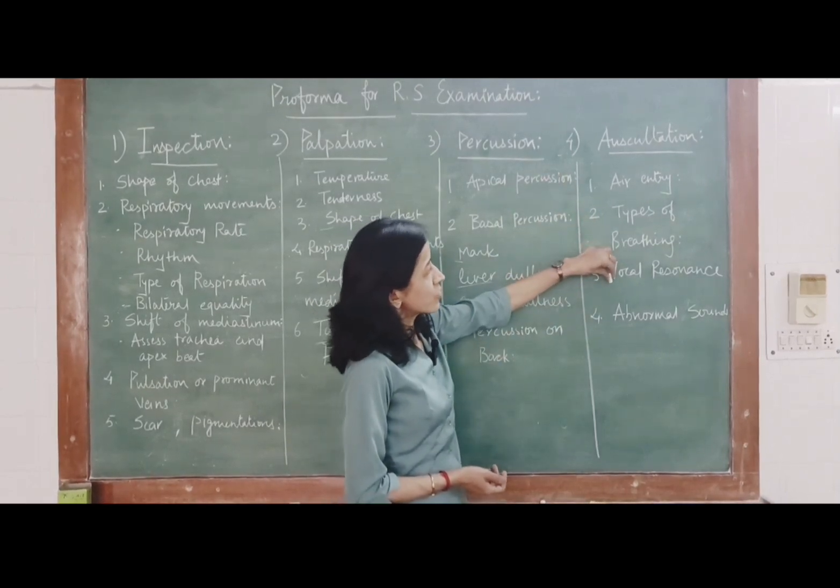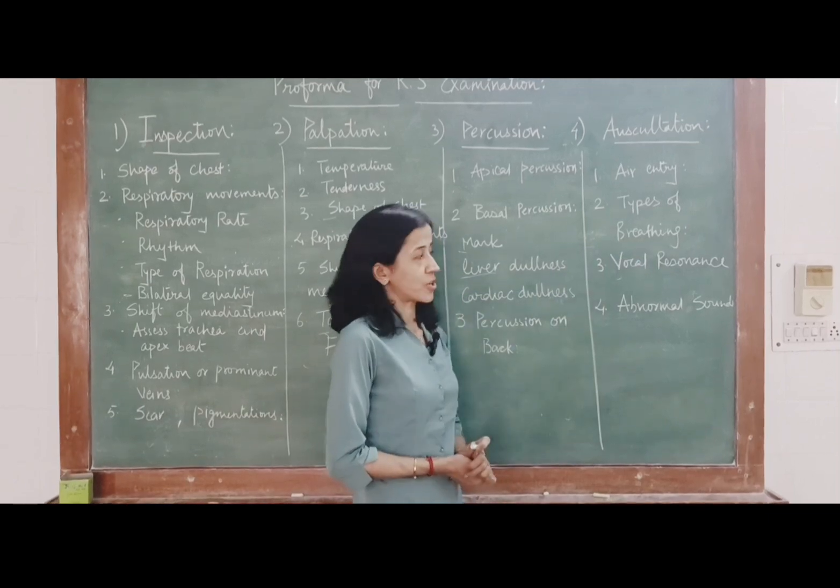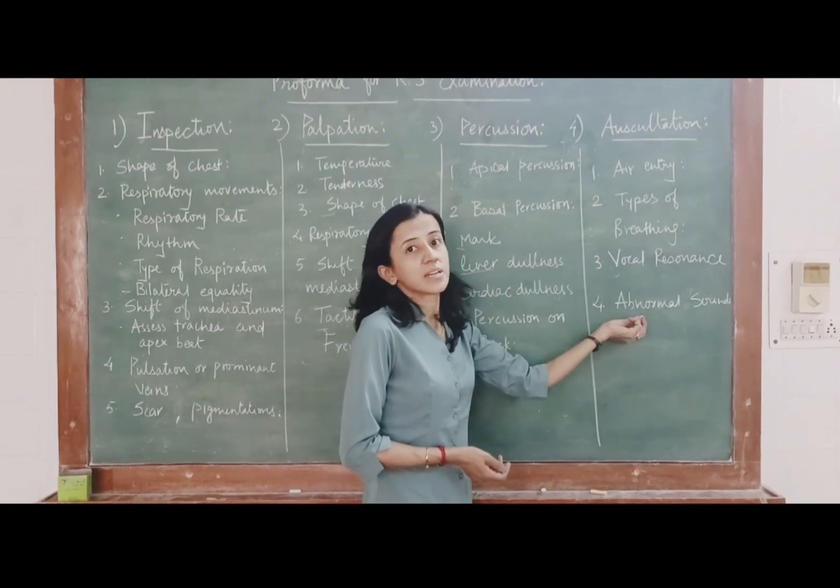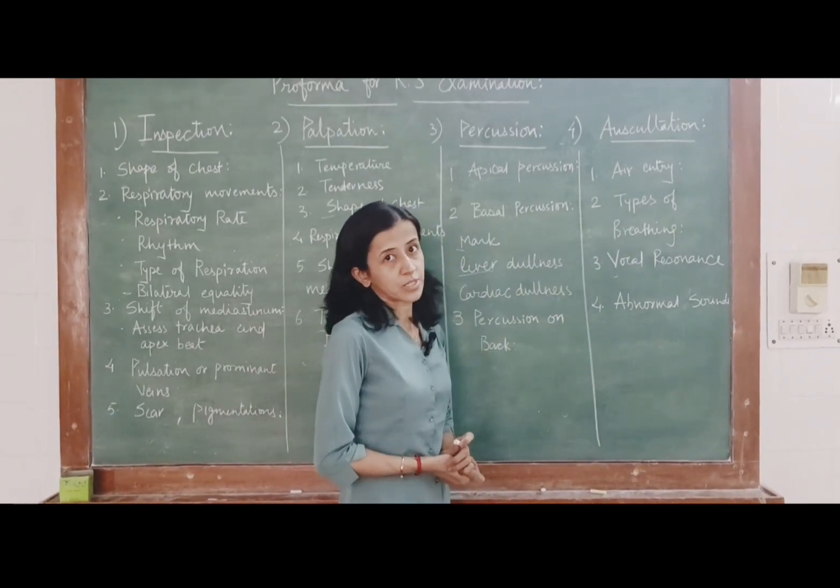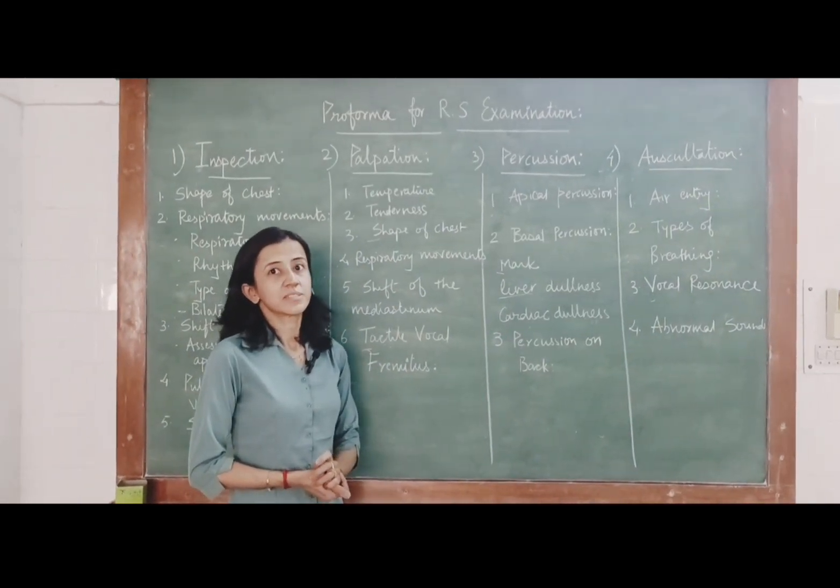You have to auscultate for vocal resonance whether it is bilaterally equal or not, and abnormal sounds like rales, rhonchi, whether they are present or not. So this is all about respiratory system examination. Thank you all.